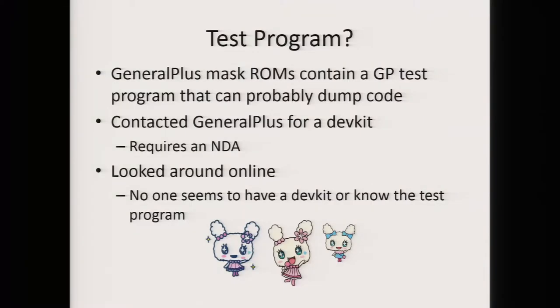The first thing I did was look at the test functionality. It turns out all General Plus microcontrollers have a mandatory test program, and I suspected it would probably allow you to dump code — because maskrom is expensive up front but cheap to make copies, so customers might complain it wasn't manufactured correctly and they'd need a way to prove it was. I looked around quite hard for this, but unfortunately at this point I could not find the test program, so I had to move on.